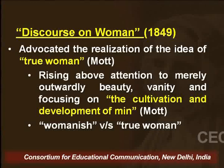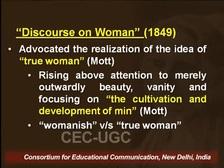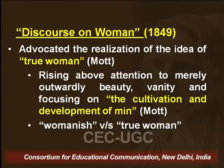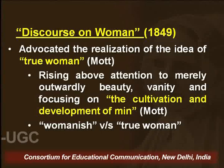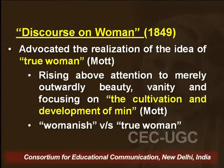The second important argument in Mott's essay pertains to the phrase 'true woman.' She talks about the realization of the idea of true woman by every woman in society, saying that every woman should be capable of living this idea. A woman becomes a true woman when she rises above attention to merely outward beauty and vanity and starts to focus on, as Mott says, the cultivation and development of the mind.